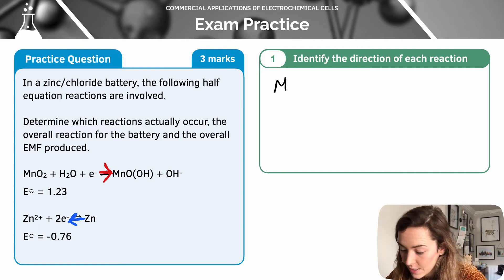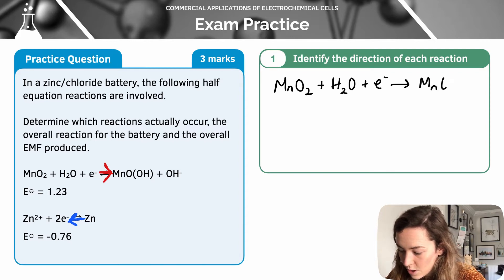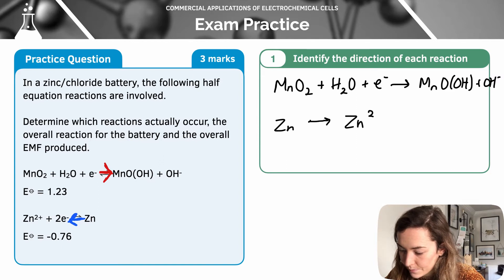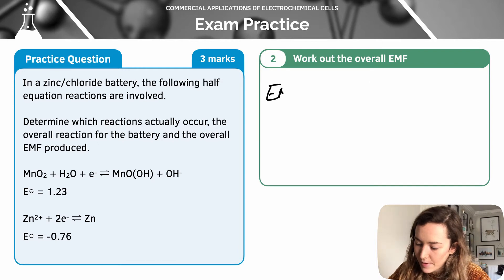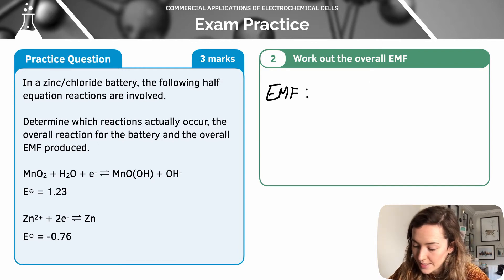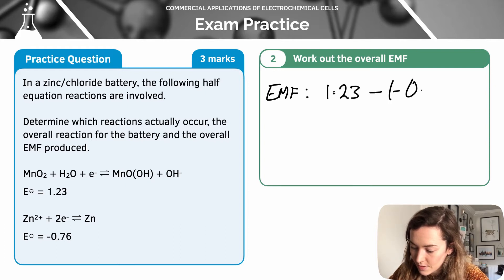Writing those out: the reaction at the manganate electrode is written as presented in the table. At the zinc electrode, we're going to have oxidation happening. To calculate the EMF, it's the more positive minus the more negative. So I take manganate: 1.23 minus the more negative −0.76, giving an EMF of 1.99 volts.